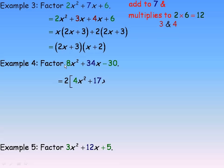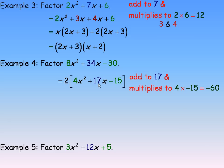So, factoring a 2 out: 2 into 8x squared goes 4 times, 34 divided by 2 is 17, and negative 30 divided by 2 is negative 15. So instead of multiplying to negative 240 and adding to 34, the two numbers would add to 17 and multiply to negative 60. Negative 15 times 4 is negative 60 — still fairly big, but certainly a lot smaller than negative 240.